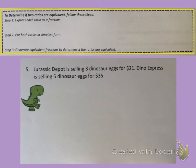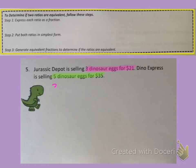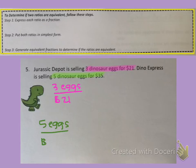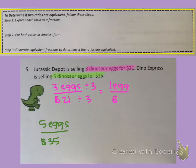Jurassic Depot is selling three dinosaur eggs for $21, and Dino Express is selling five dinosaur eggs for $35. Let's express both of these ratios as fractions: three eggs for $21, and five eggs for $35. Step two is to put both ratios in simplest form. Three and 21 are both divisible by three, so I get one egg for $7.